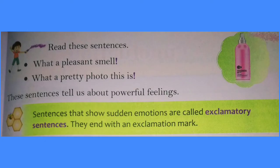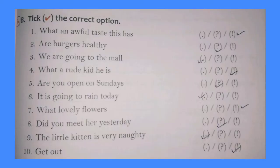The next type of sentence is exclamatory sentences. Sentences that show sudden emotions are called exclamatory sentences. They end with an exclamation mark. Look at these examples: 'What a pleasant smell.' 'What a pretty photo this is.' These sentences tell us about powerful feelings. For example, 'What an awful taste this has' — it's an exclamatory sentence, so we use an exclamation mark.